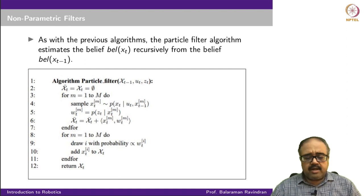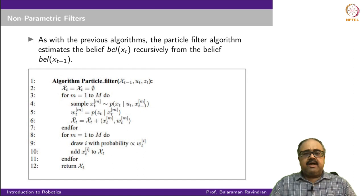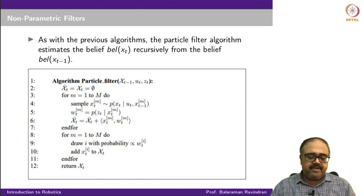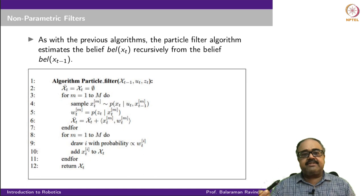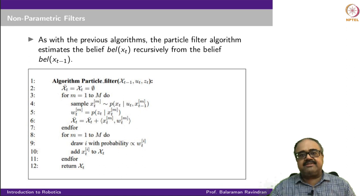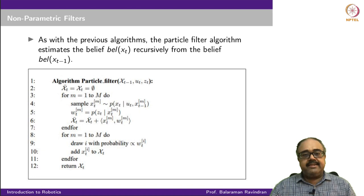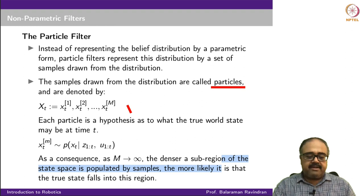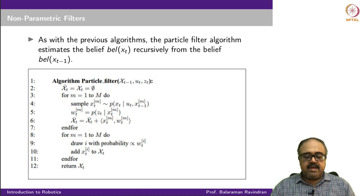As with earlier versions of the Bayes filter algorithm, in the particle filter we update belief of x_t recursively from belief at x_{t-1}. The algorithm takes as input the current action u_t, the current observation z_t, and our representation of Bel(x_{t-1}). In the Gaussian filters, Bel(x_{t-1}) was represented by mu_{t-1} and sigma_{t-1}. In the particle filter, Bel(x_{t-1}) is represented by the set of particles script X_{t-1}.